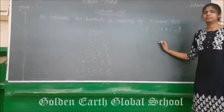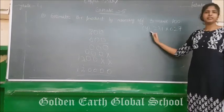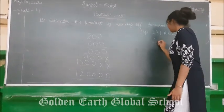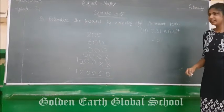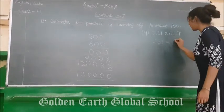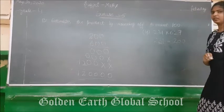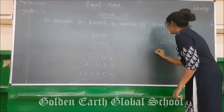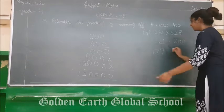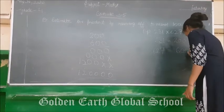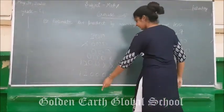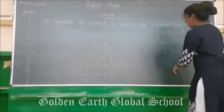Now doing the fourth part — the second and third parts you have to do by yourself. The first number is 231: its last two digits are 31, which is less than 50, so its nearest 100 is 200. The next number is 627: its last two digits are 27, which is less than 50, so we shift to the backward 100, which is 600. The answer is 120,000.